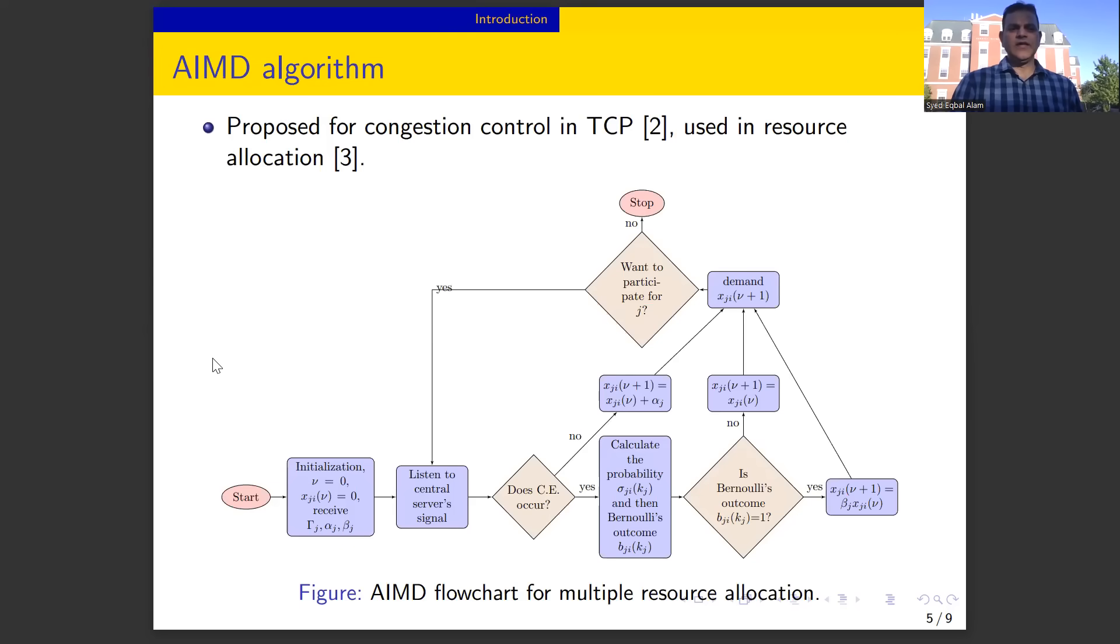The AIMD has two phases. One is called additive increase phase, another one is multiplicative decrease phase. In the additive increase phase, the agents keep increasing their resource demand linearly until they receive a capacity constraint notification from the central server. The central server sends one-bit capacity constraint notification when the aggregate resource demand reaches the resource capacity.